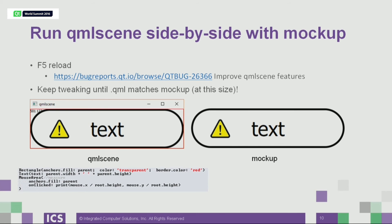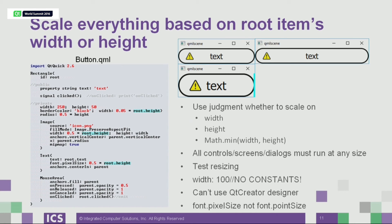The main point to take away from this talk is that you want to scale everything in the UI based on the root item's width or height. Whether it's width or height is a judgment call you make on a case by case basis. For this button, I'm scaling the border thickness, the image size, and the text size based on the height of the root item. This means you can't use any constants — you can't say width equals 100. Consequently, you can't use the Qt Creator Designer because it puts in code like that, which won't let you scale.